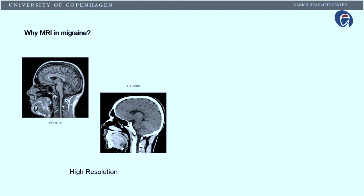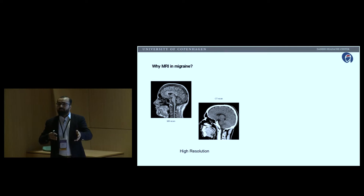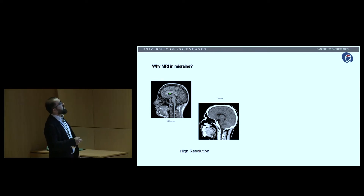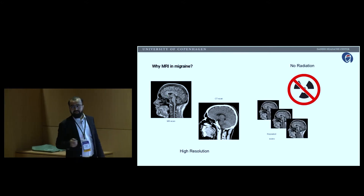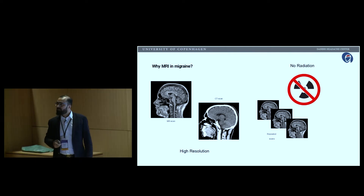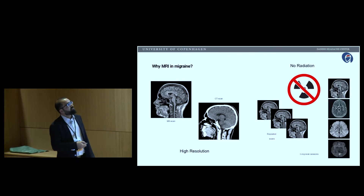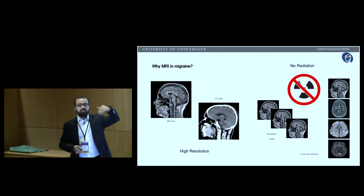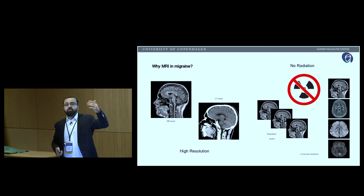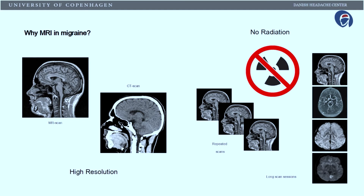Why do we use MR scans? First of all, we have very high resolution on MR scans — the best resolution available at the moment, compared to CT or PET scans. We also have no radiation, which allows repeated scans without adding radiation to the patient. We can also do longitudinal long-sequence scan sequences where we do everything simultaneously in the same patient — functional MRI, structural MRI, and vascular imaging — all in the same session. Patients can be in the scanner for one to one-and-a-half hours, and we can get a lot of information. That's the reason we use MR scans.